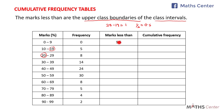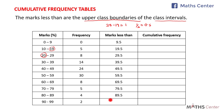The first marks less than value is 9.5. The second is 19 plus 0.5 which is 19.5. The next is 29.5, and it continues: 39.5, 49.5, 59.5, 69.5, 79.5, 89.5, and 99.5. We are done with the marks less than column.